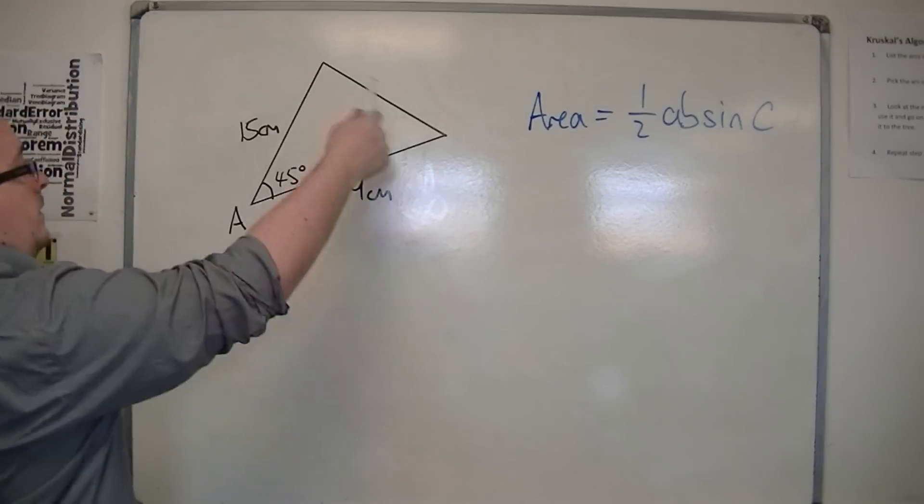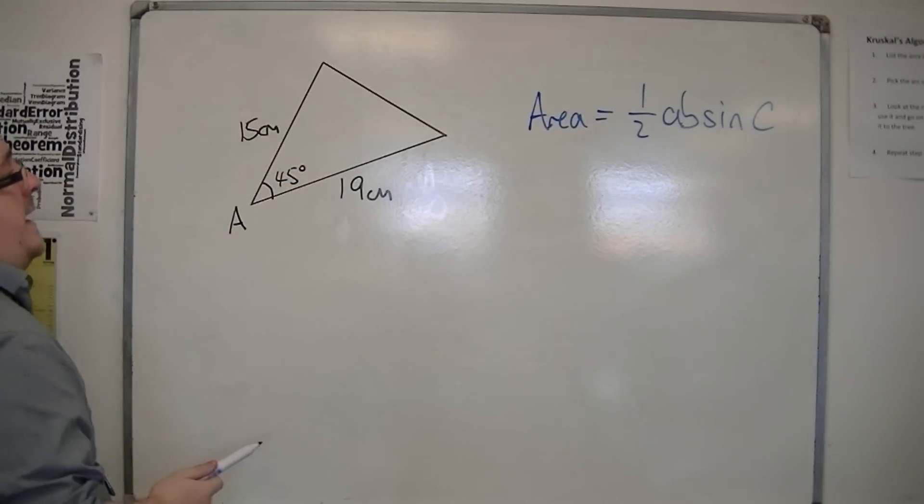Let's say we've got this triangle here. I want to find the area of it. I'm given an angle, 45 degrees.